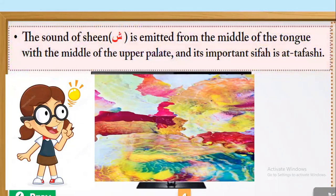That means the sound of Sheen is emitted from the middle of the tongue with the middle of the upper palate. It is important that its sifat is at-tafashi: shh.